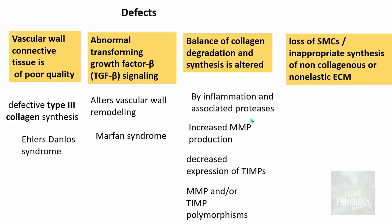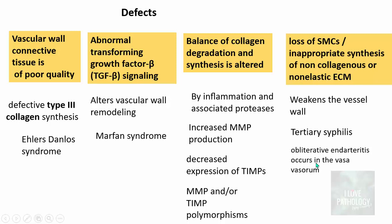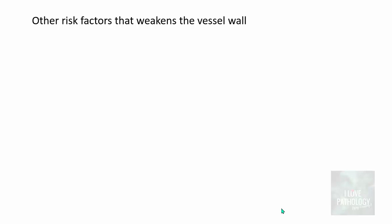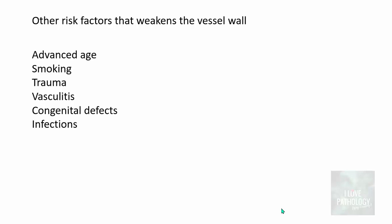The last defect is loss of smooth muscle cells or inappropriate synthesis of non-collagenous or non-elastic extracellular matrix, which weakens the vessel wall. This is usually seen in tertiary syphilis, where obliterative endarteritis of the vasa vasorum results in medial ischemia, leading to smooth muscle cell loss and wall weakness, thereby forming an aneurysm. Apart from these mechanisms, other risk factors that weaken the vessel wall include advanced age, smoking, trauma, vasculitis, congenital defects, and infections.